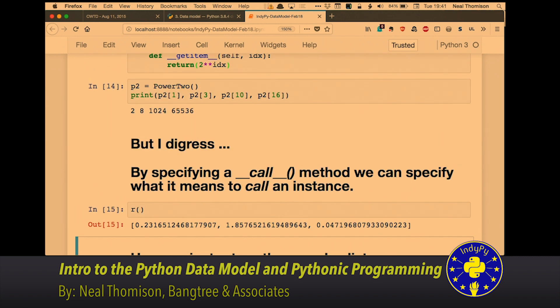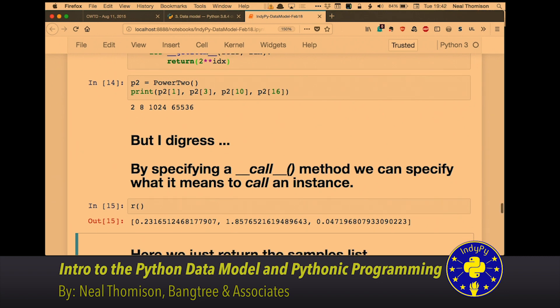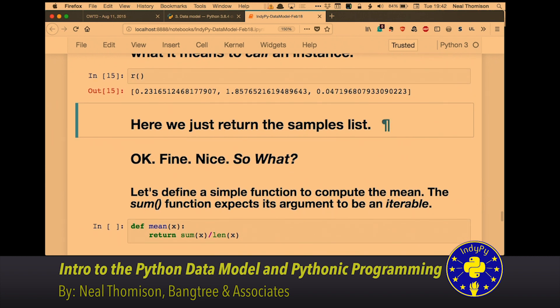This is the dunder call method, which basically says, hey, I'm giving you the instance of an object, calling it like a function. What should I do? I said, you can go across all the things, but kind of just to bring this in for a landing. So, what? Why is that cool?